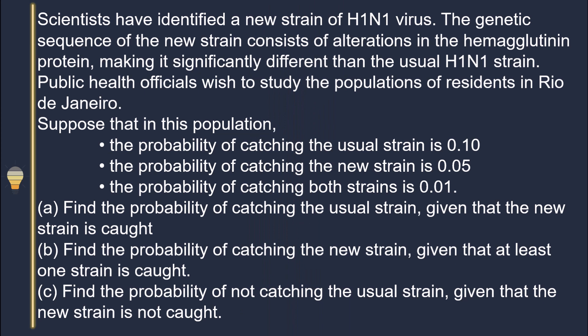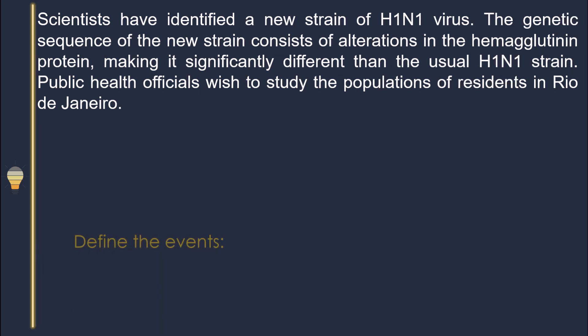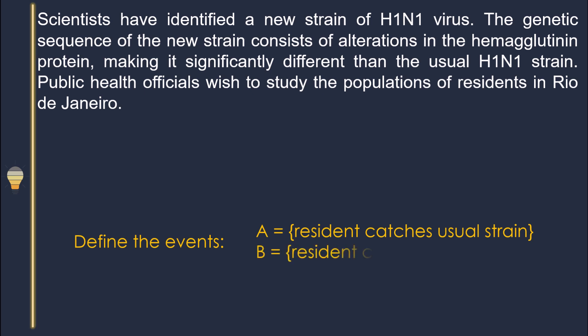Let me explain this example first. Let me define events. How many events are in this example? There are two major events. I can define event A and B. A is the resident catches the usual strain, and B is the resident catches the new strain.